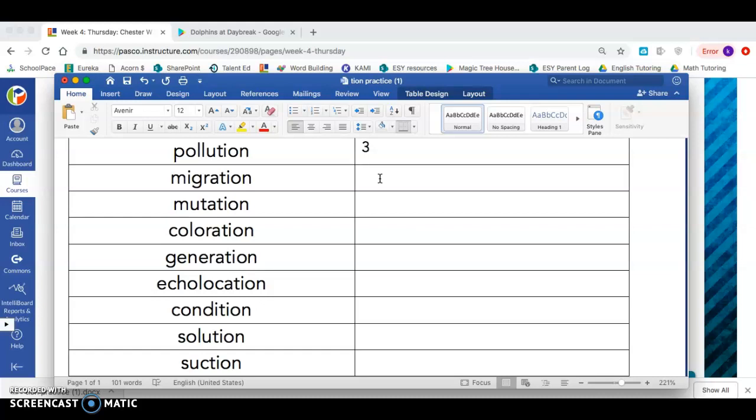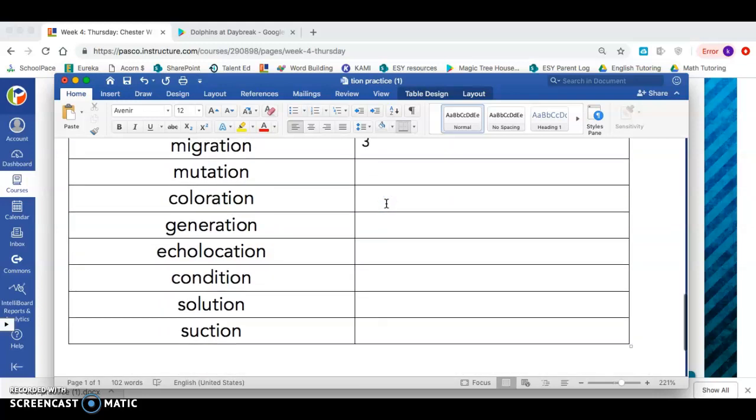Migration also has three syllables. Mutation, coloration has three syllables. Coloration, I clap four times, so that has four syllables. Generation, I clap four times, so that also has four syllables.